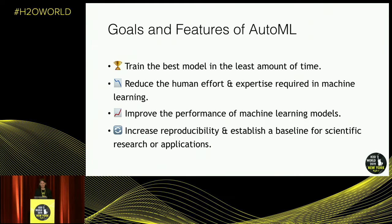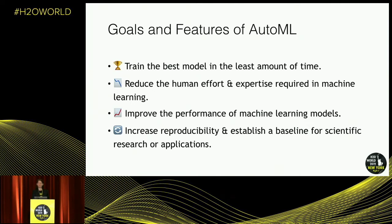One of the main goals is to train a model in the least amount of time — that could be developer time, user time, writing code, but also how much computation time it takes to get a very good model. This means reducing the human effort involved: writing less code, investigating fewer methods on our own. The effort in training models goes down, but also it can bring down the expertise required. AutoML is a tool for people of all abilities, from people new to machine learning to those working on very advanced topics.